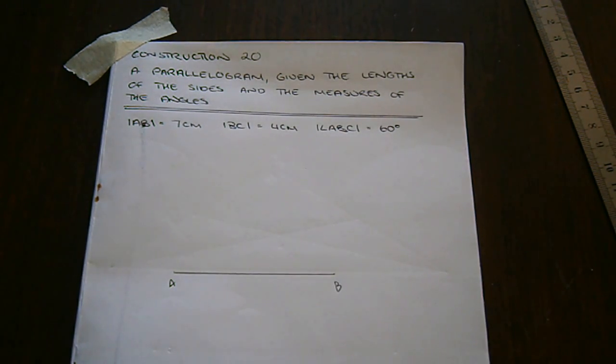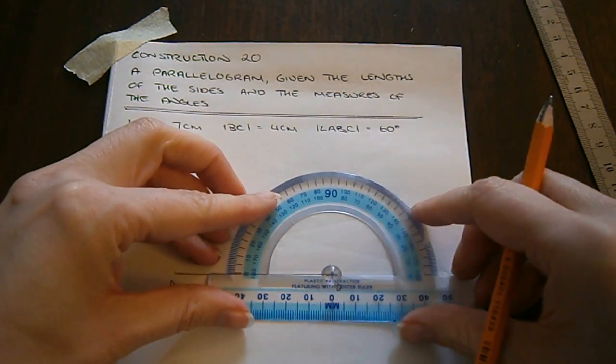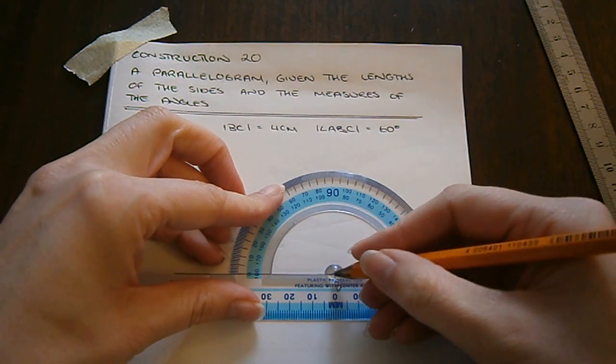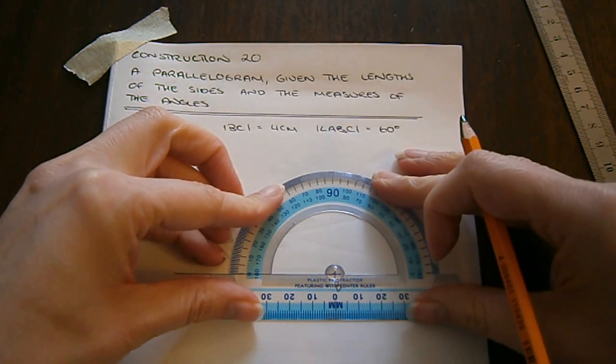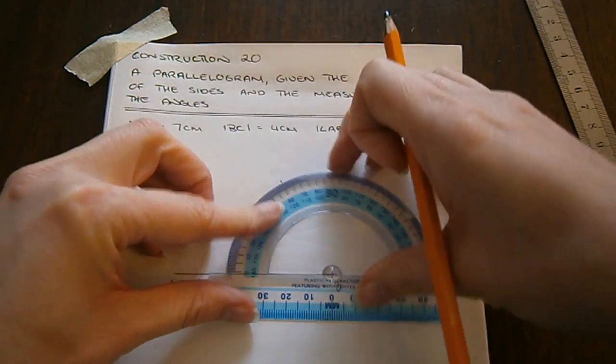Next, I want to draw the angle ABC, so that being 60 degrees. I use my protractor. I put the center point of the protractor on B, and I mark an angle of 60 degrees from B.